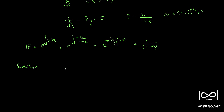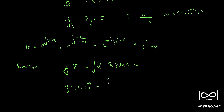The solution for a linear differential equation is given by y times the integrating factor equals the integral of (integrating factor into Q) dx plus c. So y into (1+x)^(minus n) equals integral of (1+x)^(minus n) into e^x into (1+x)^(n+1) dx. The minus n and n cancel.